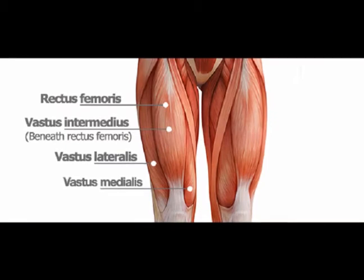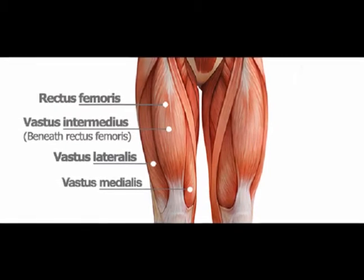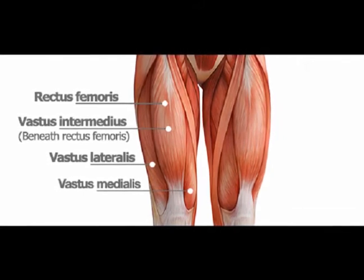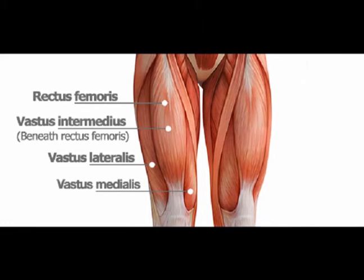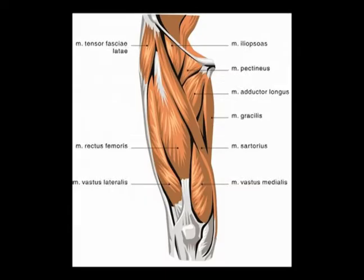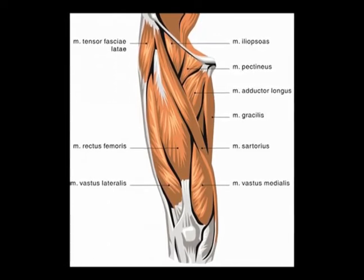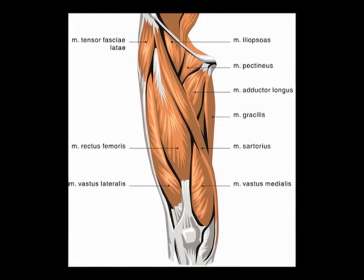The quadriceps muscles — everyone knows what they are. They're often abbreviated to the quads. The quadriceps muscles are located in the anterior aspect of the thigh. They're a group of four muscles, hence the name quads. These four muscles consist of the rectus femoris, the vastus intermedius, the vastus medialis, and the vastus lateralis.